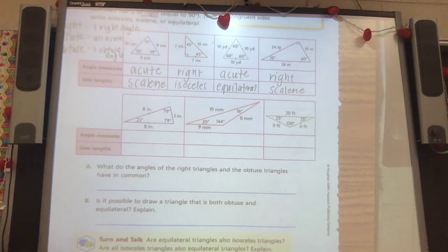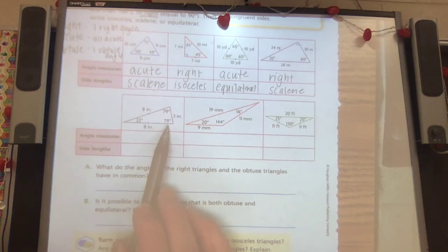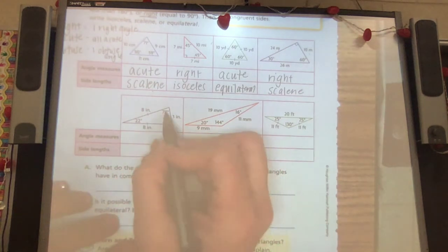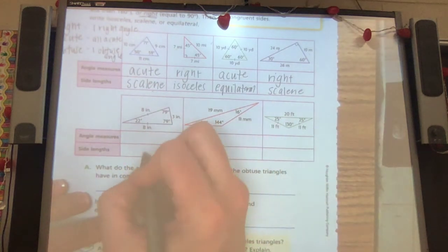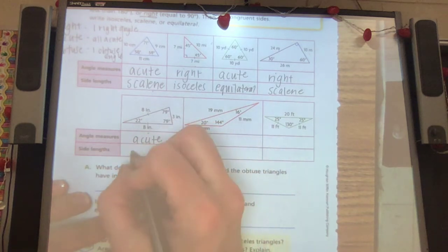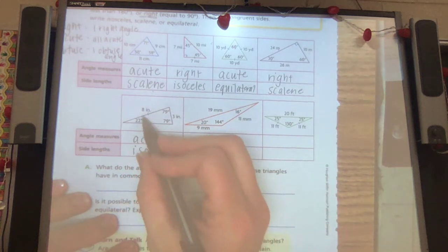And let's look at this one. We've got 79, 22, 79. They're all acute. They're all less than 90. 8, 8, 3 means isosceles because two of the sides are equal.